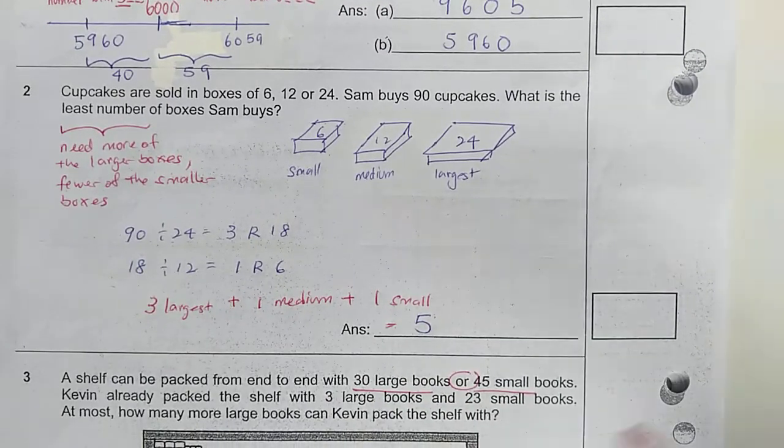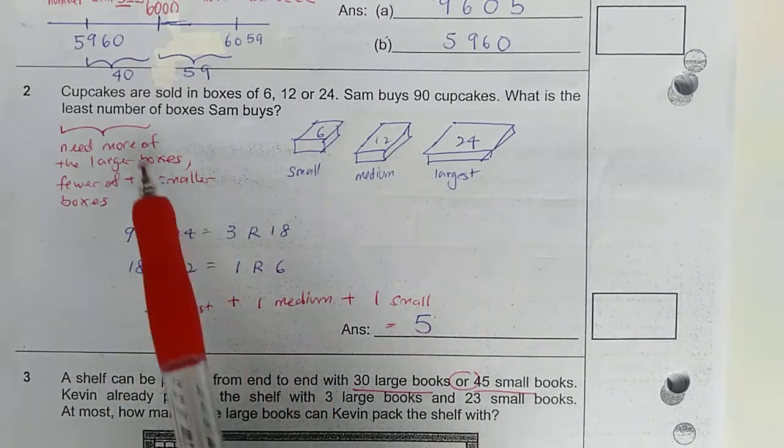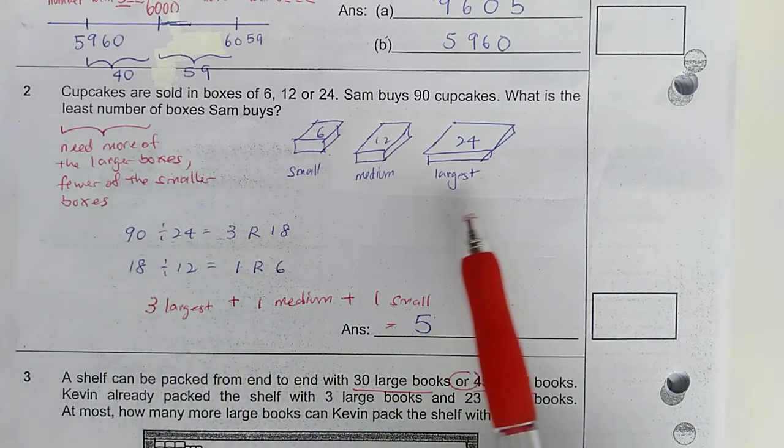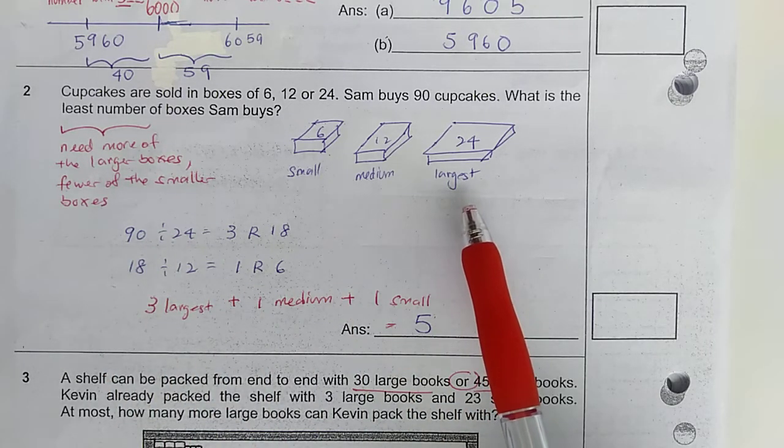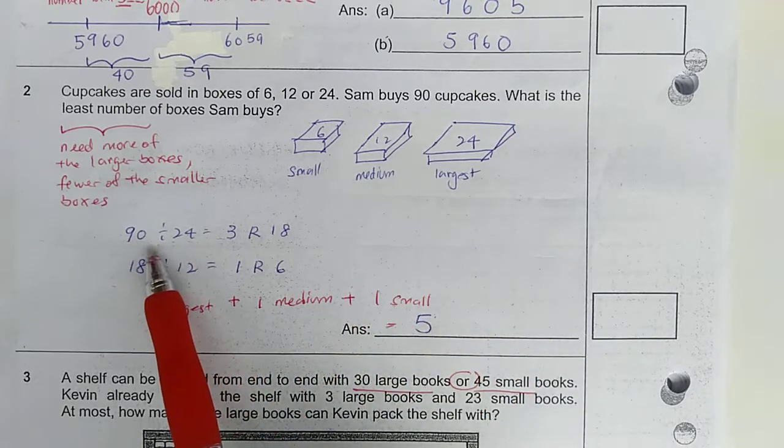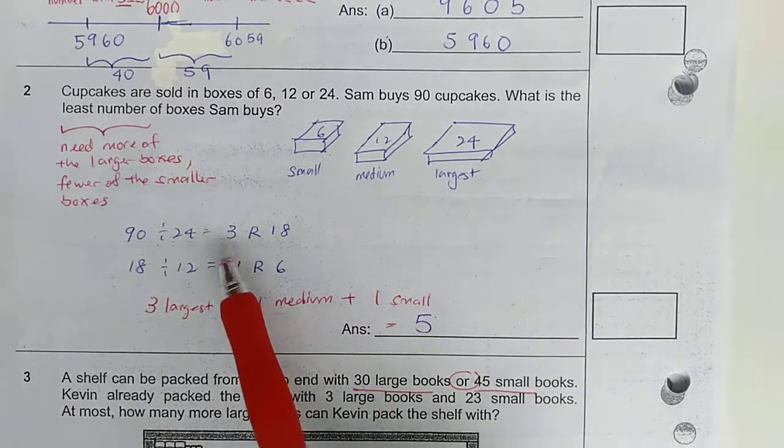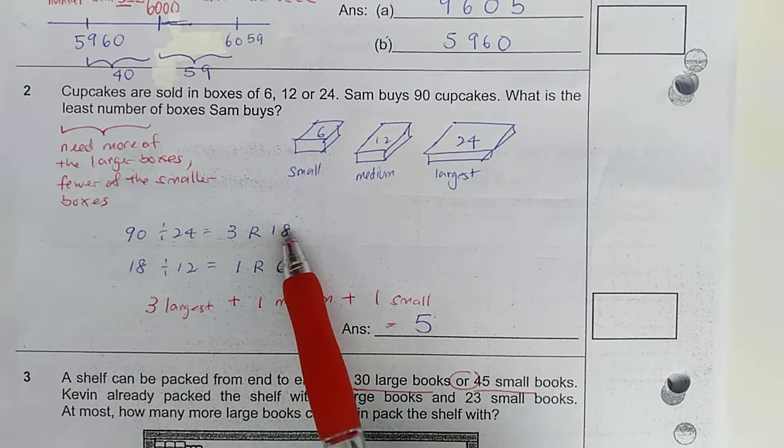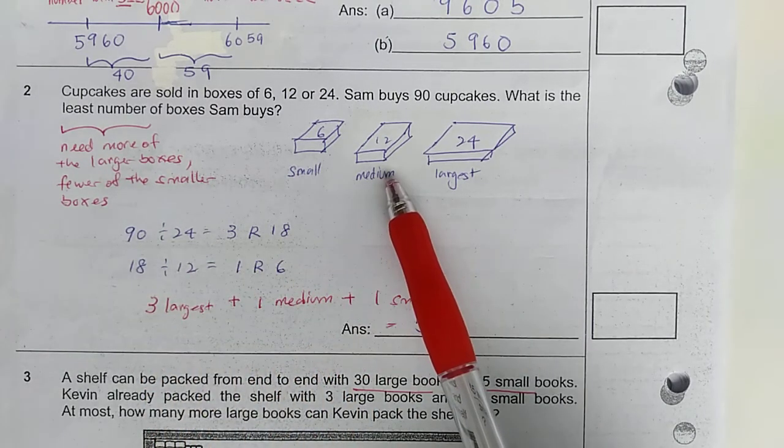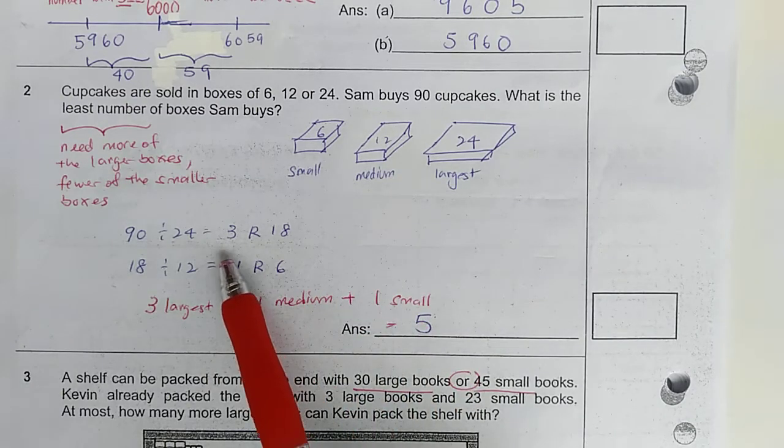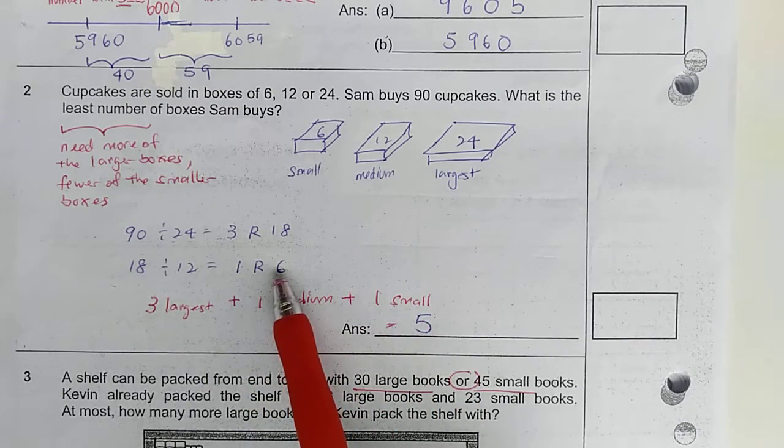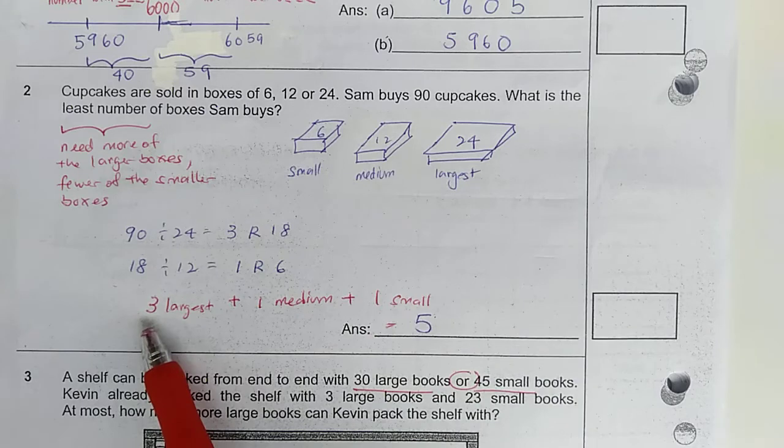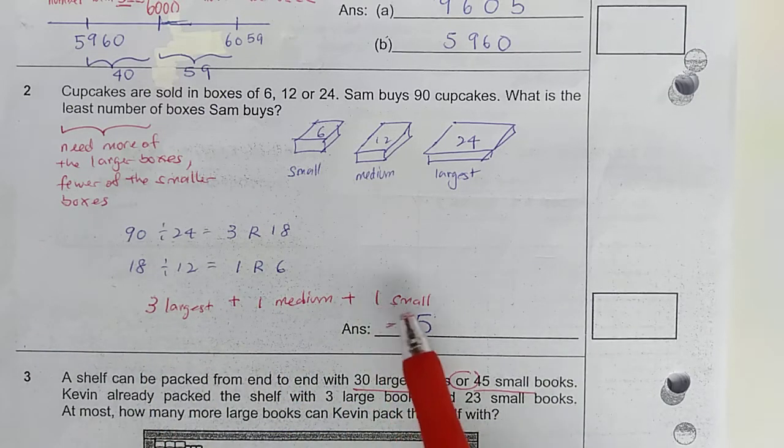Question 2. Now, since you need to find the least number of boxes, that means you need more of the larger boxes and fewer of the smaller boxes because the larger boxes can hold more cupcakes. So, let's divide the total number of cupcakes by 24, which is this. To find out, we need 3 large boxes and then 18 cupcakes remain. And then 18 cupcakes divided by 12. This will be the medium box. Then you will find out you need 1 of the medium-sized box and 6 remainder. And the remaining 6 cupcakes can enter the small box. So, total 3 large boxes, 1 medium box, 1 small box gives you 5 boxes.